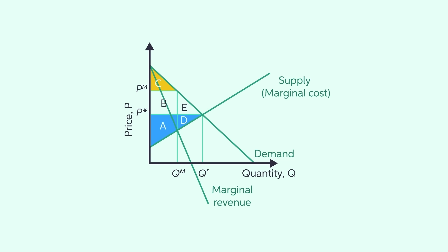The producer surplus, the amount a seller pays for a good minus the seller's cost of providing it, corresponds to the sum of areas A and D under perfect competition. It shifts to the sum of areas A and B if the producer is a monopolist.